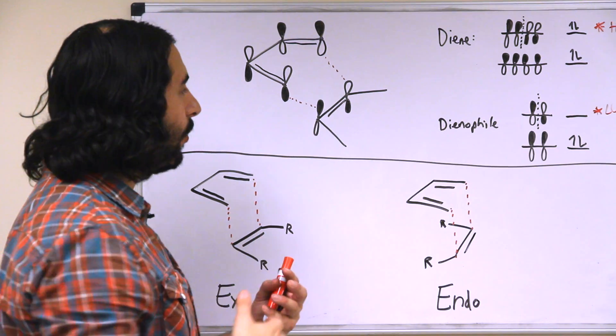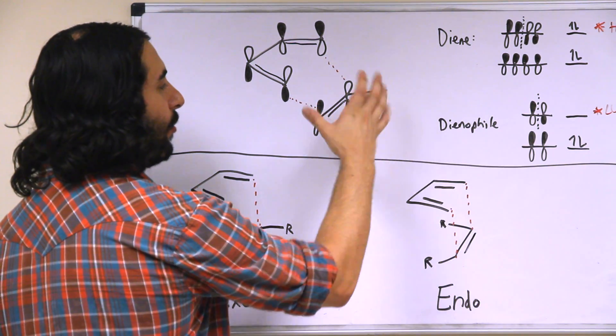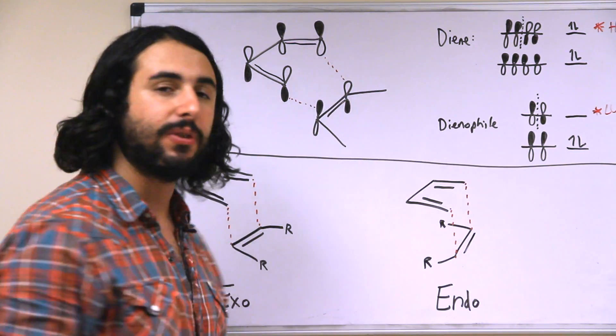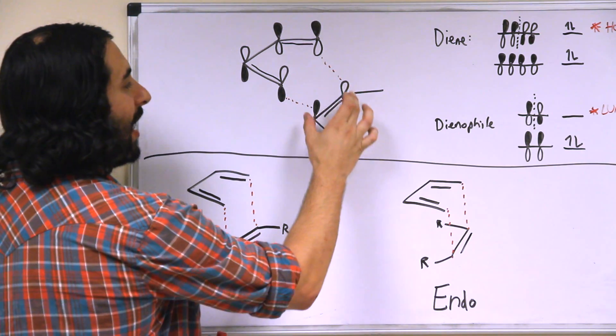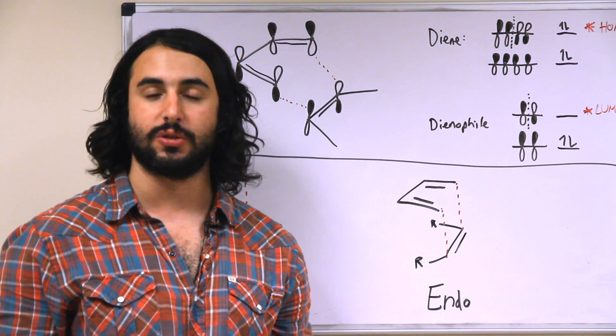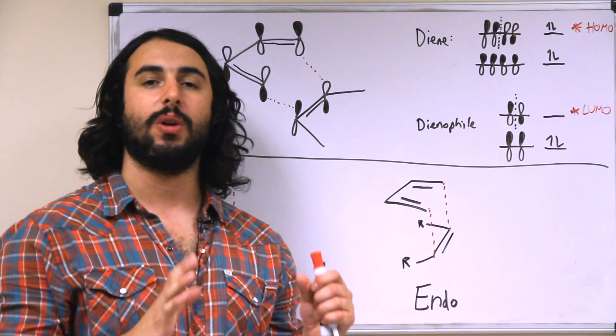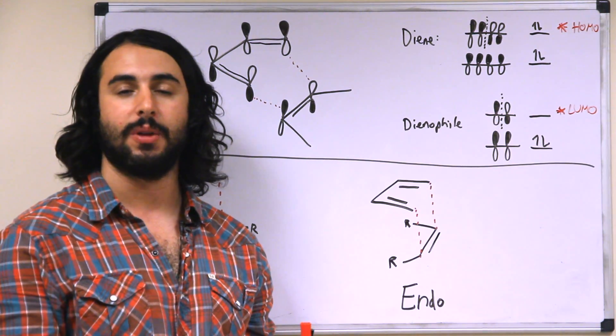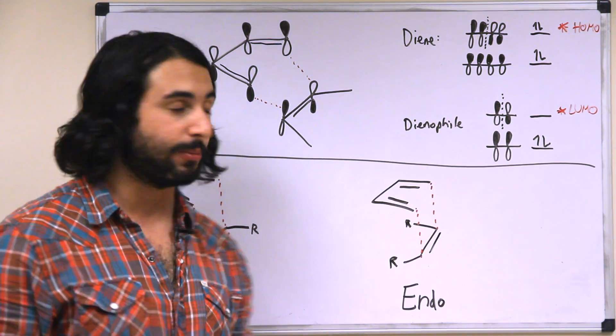However, if there were more pi electrons or this molecule was different in some way such that these were not in phase, then the Diels-Alder reaction would not be able to occur. So that's something to keep in mind. We always have to check the orbital diagram to make sure that a Diels-Alder reaction is possible.